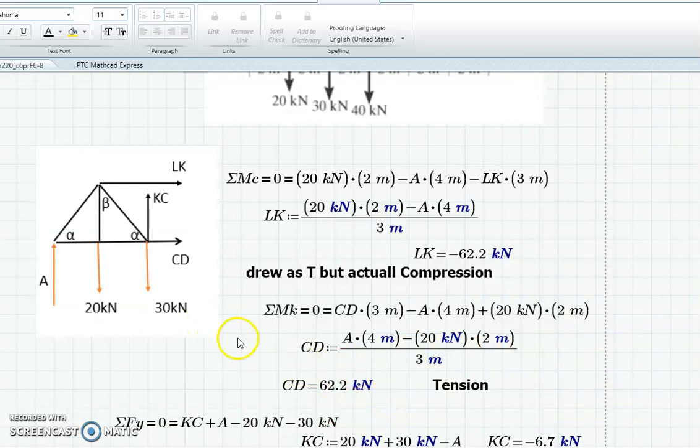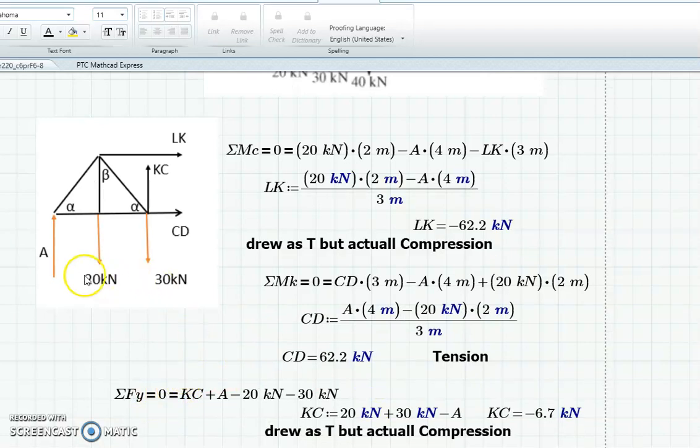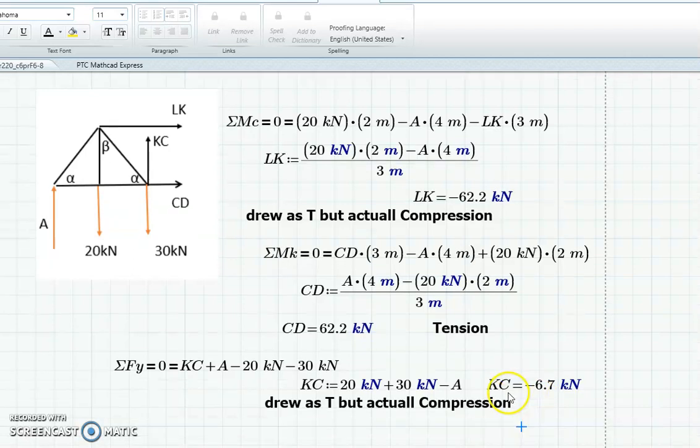And then I can just sum the forces in Y, 1, 2, 3, 4, and solve for KC. Again, if I did that right, it came out negative, so that means it's really a compression, even though I drew it as a tension.